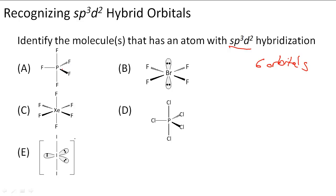Here, P has 1, 2, 3, 4, 5 bonds. It has 5 bonds making it have 5 orbitals. So we know that cannot have a hybridization of sp3d2. So A is out.